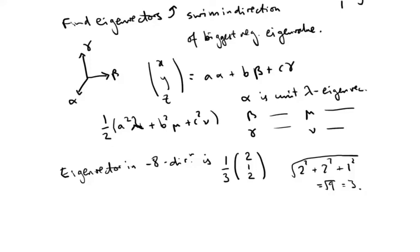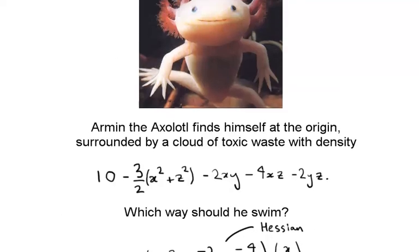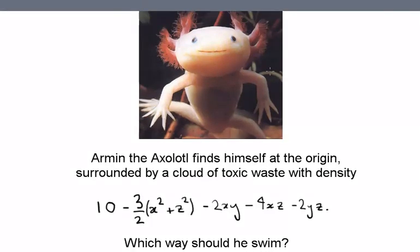Okay, so the answer is that Armin the axolotl should swim in this unit direction. And thereby escape the toxic cloud of waste, making him extremely happy.